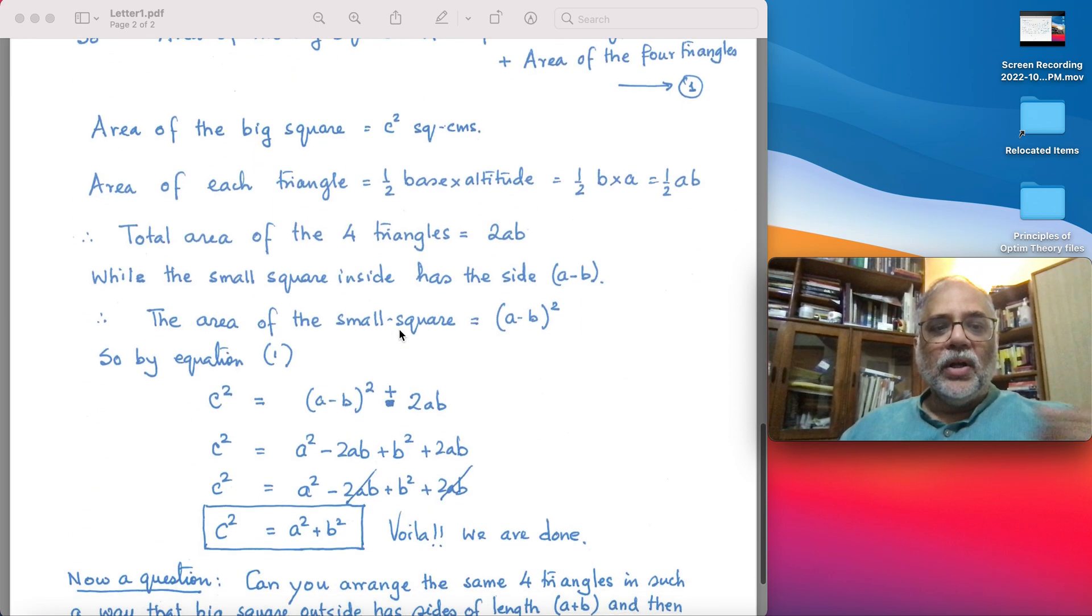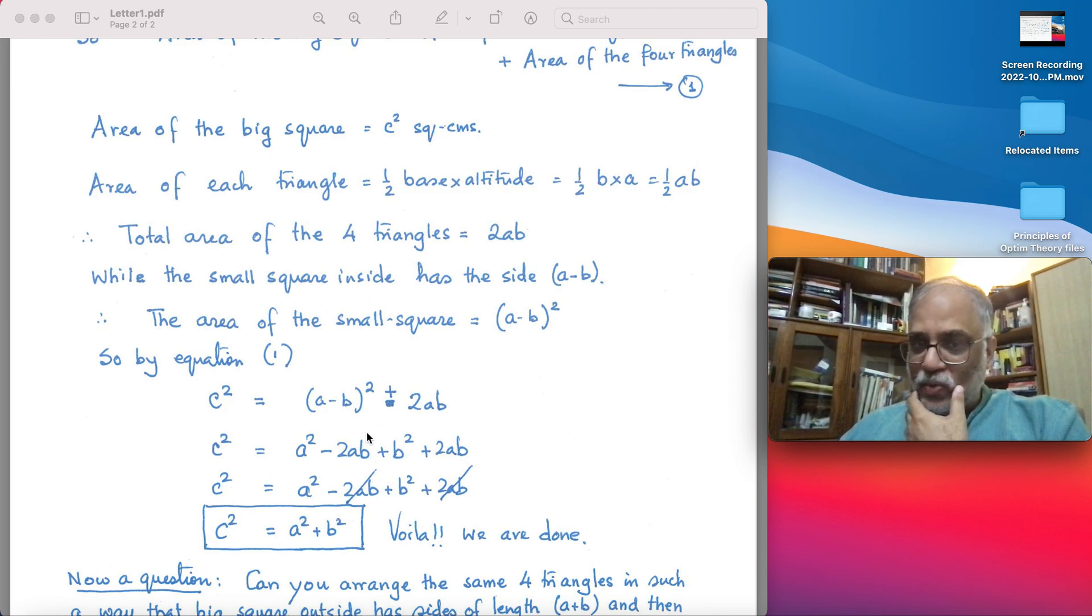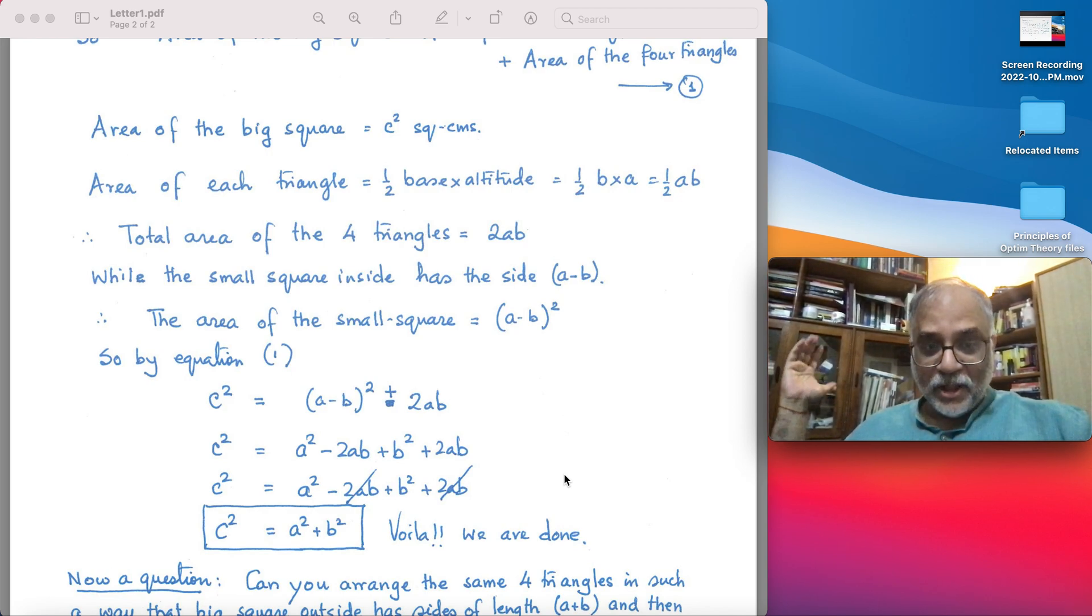So we write c² equals (a-b)² plus 2ab. Expand (a-b)² to get a² minus 2ab plus b² plus 2ab, which cancels out with the minus 2ab here, and you get c² equals a² plus b². And the French would say voilà, we are done.